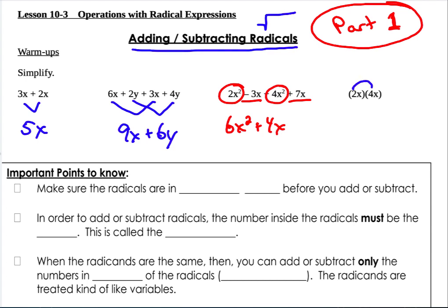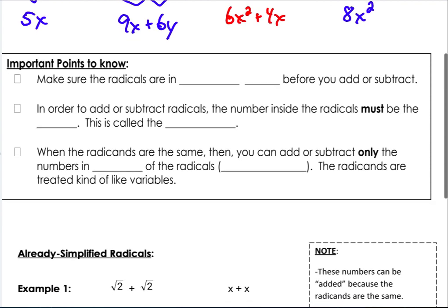When they're next to each other, when they're being multiplied, we multiply the variables and the coefficients. So 2 times 4 is 8, x times x is x². So we're going to do the same thing with our radicals, but we have a couple of rules.